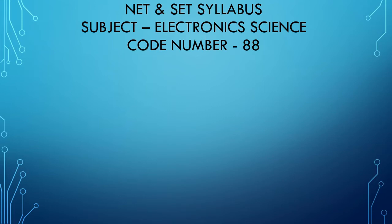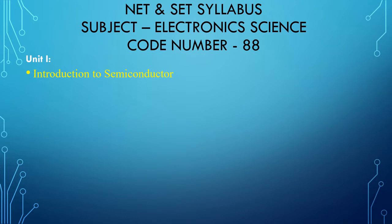In this slide, we discuss about the NTA NET and West Bengal State Syllabus of subject Electronic Science. The code is 88 for NTA UGC NET for Electronic Science subject. This is paper 2. Paper 1 is the general paper and paper 2 is the subject paper. In this session, we cover Electronic Science subject Unit 1. The first topic of Unit 1 is Introduction to Semiconductor. I am trying to cover every topic of this Semiconductor in this session, so that we can easily understand the questions and the tricks of the question paper.